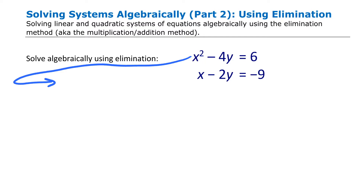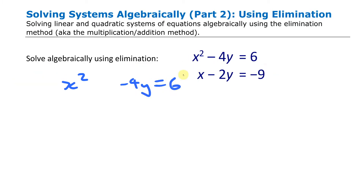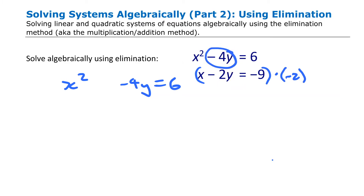I am going to leave the first equation alone as x² − 4y = 6, but the second one I am going to multiply by −2. If I multiply it by −2, this term becomes +4y, which is the opposite of −4y, so when I add the two equations together those y terms will disappear.